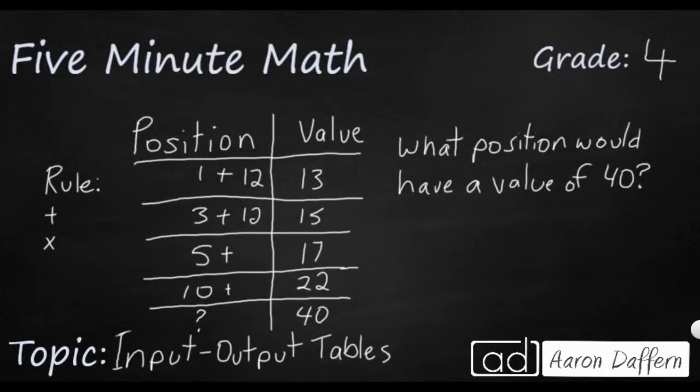Let's see. Plus 12, plus 12. Yes. 5 plus 12, 10 plus 12. So my rule is going to be plus 12. But now I need to think about what plus 12 is going to equal 40. And I give you a guarantee that if you had an answer selection of A, B, C, or D, 52 would be one of those answers because that's 40 plus 12. But that's not the answer.